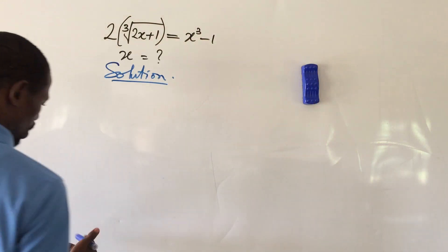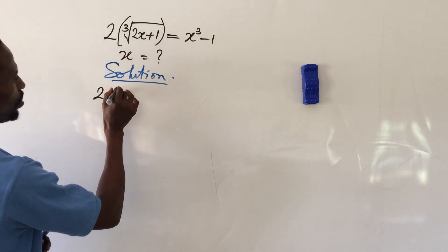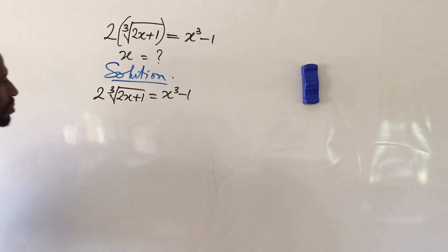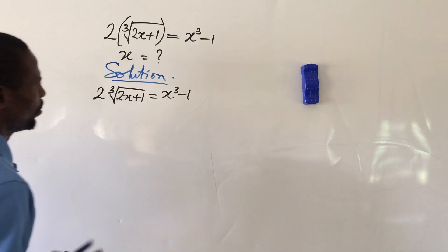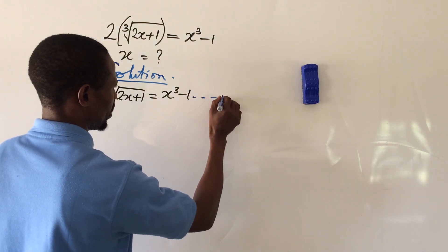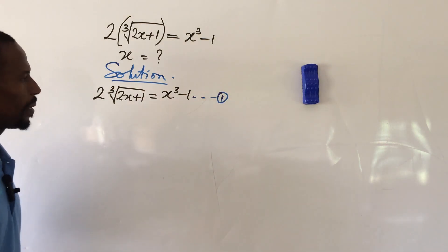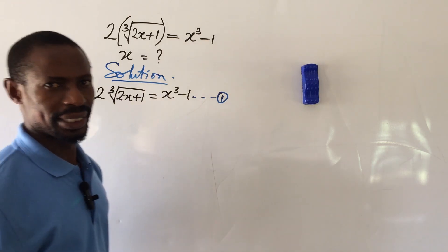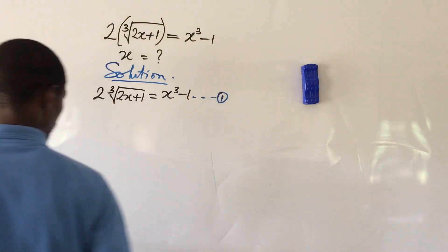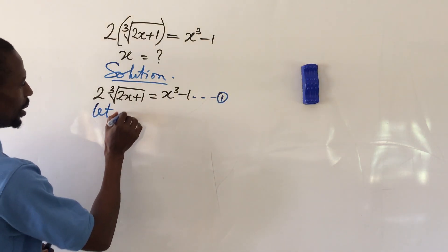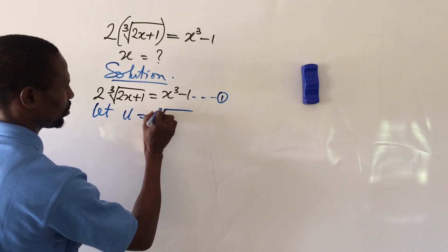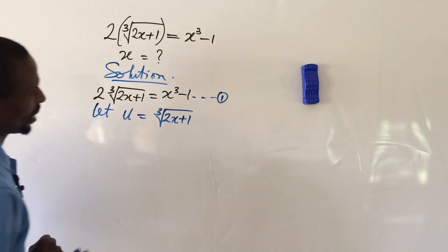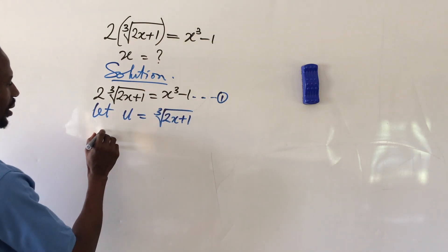The question reads: 2 times the cube root of (2x + 1) equals x to the power of three minus one. Let's call this equation one, because we're going to derive some other equations from it. From equation one, we can take the cube root of (2x + 1) and represent it with a different letter. Let u equal to the cube root of (2x + 1).